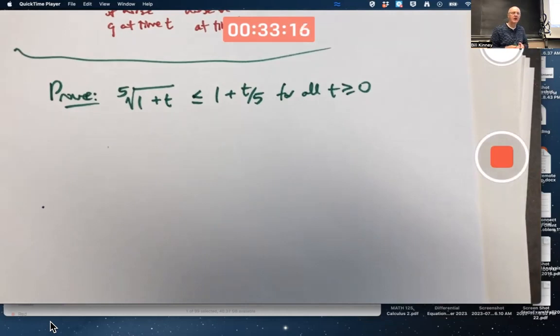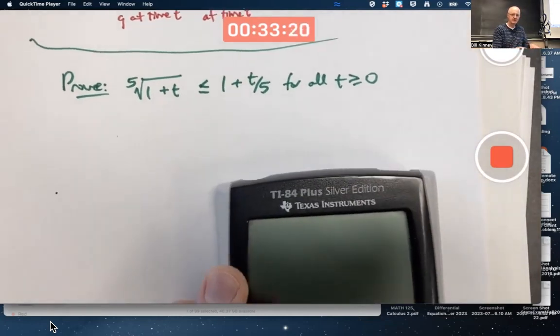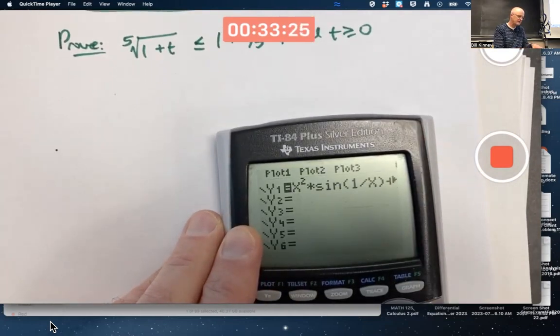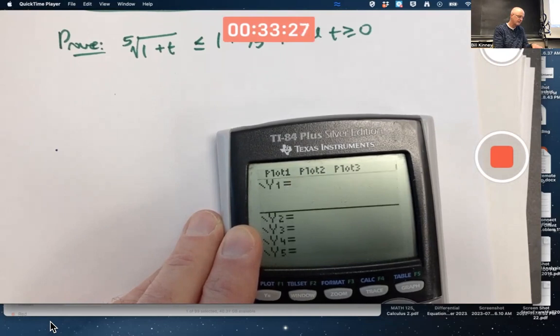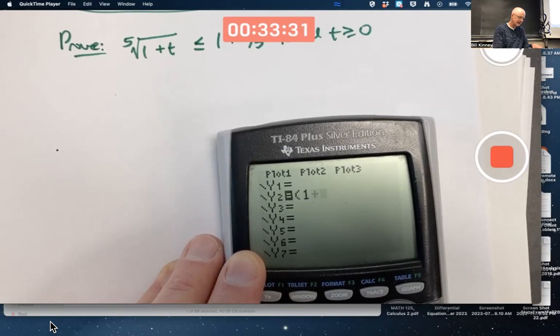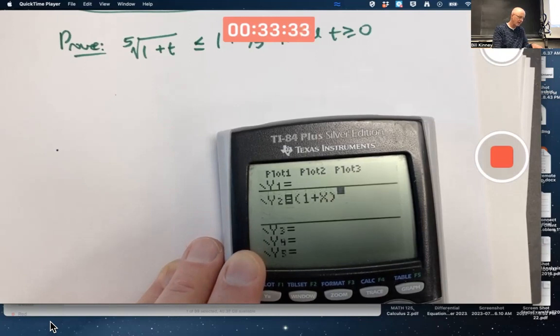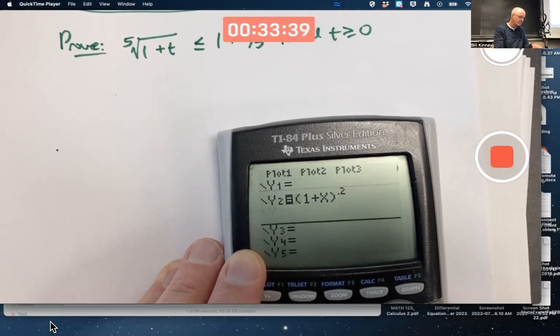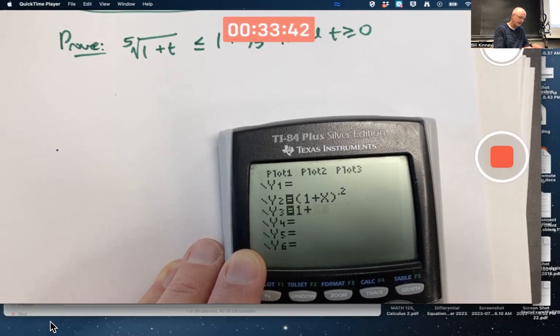That's something I happen to know is true. Let's confirm it graphically. So I will graph both of these functions here as functions of x: (1+x) to the one-fifth power, or 0.2 power, and also - I meant to put that in y1 - also 1 + x/5.